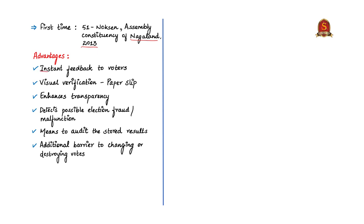VVPAT provides instant feedback to the voter, making it a two-way process. As a paper slip comes out of the EVM, it acts as a tool of visual verification and improves transparency in the electoral process. Transparency in elections is important to restore public faith in democracy. Any electoral frauds or malfunctions are easily detected as it has a direct record of votes and enables authorities to count votes manually. It also acts as a means to audit stored results and as an additional layer of securing the sanctity of votes.